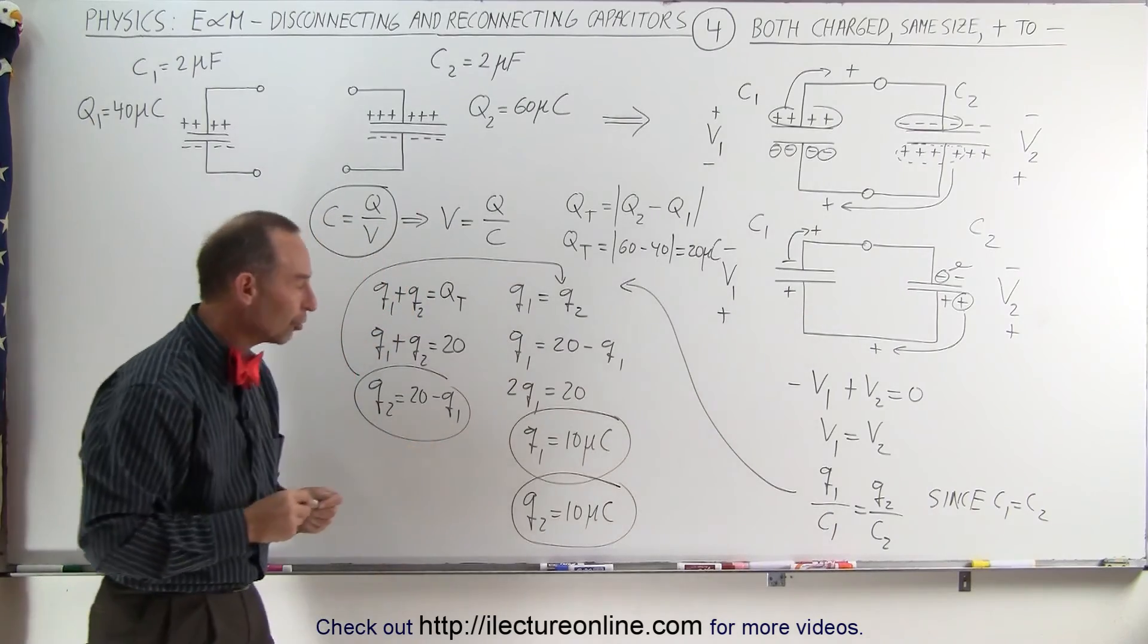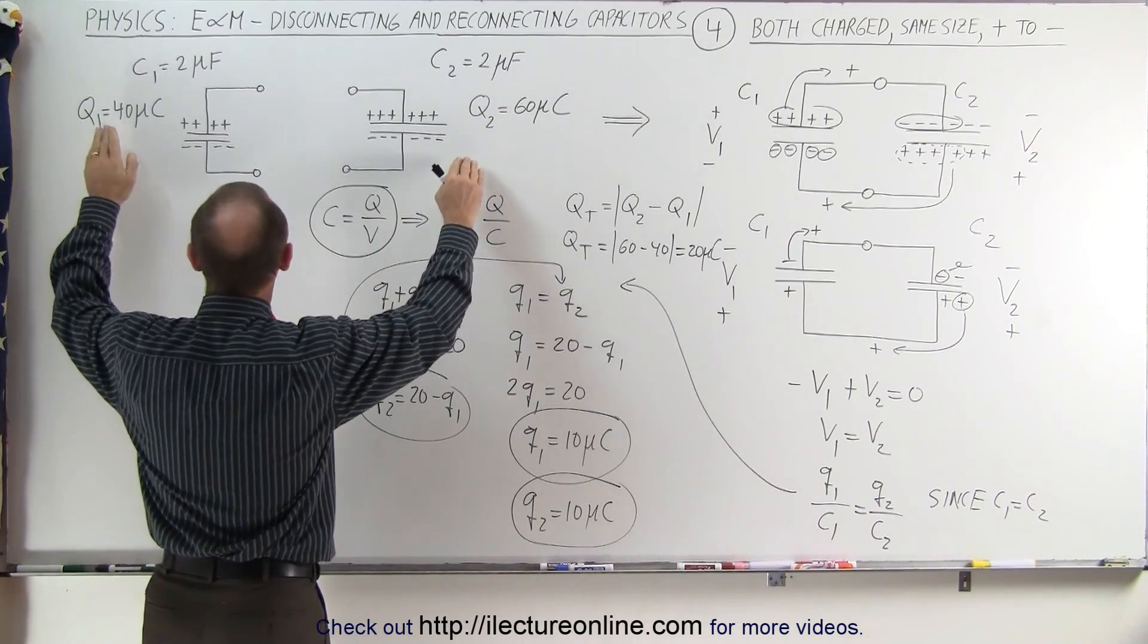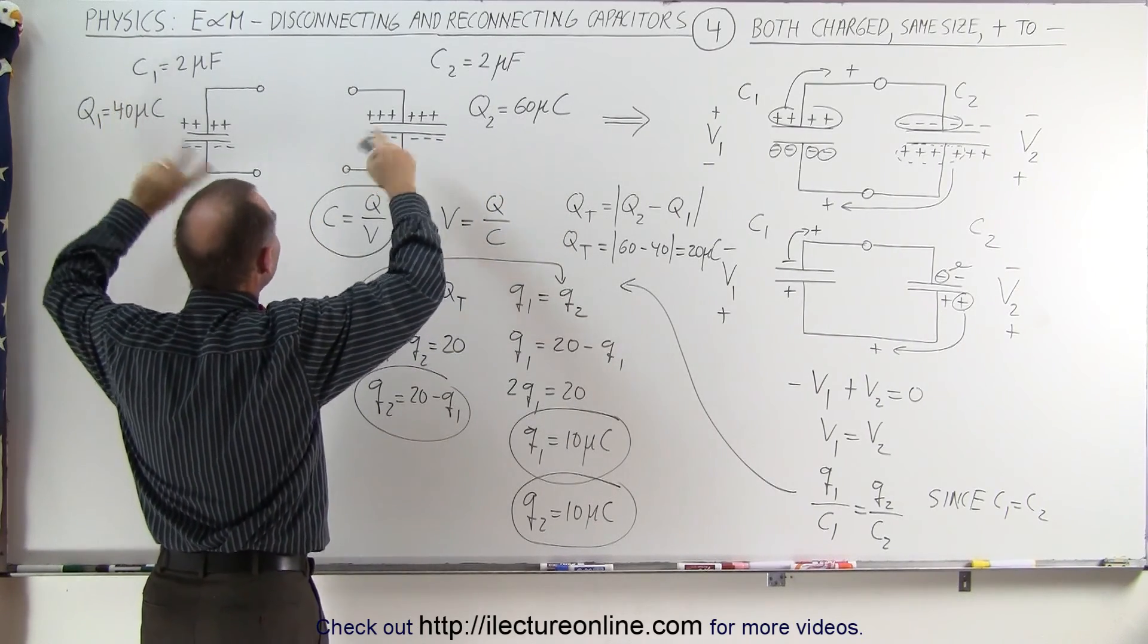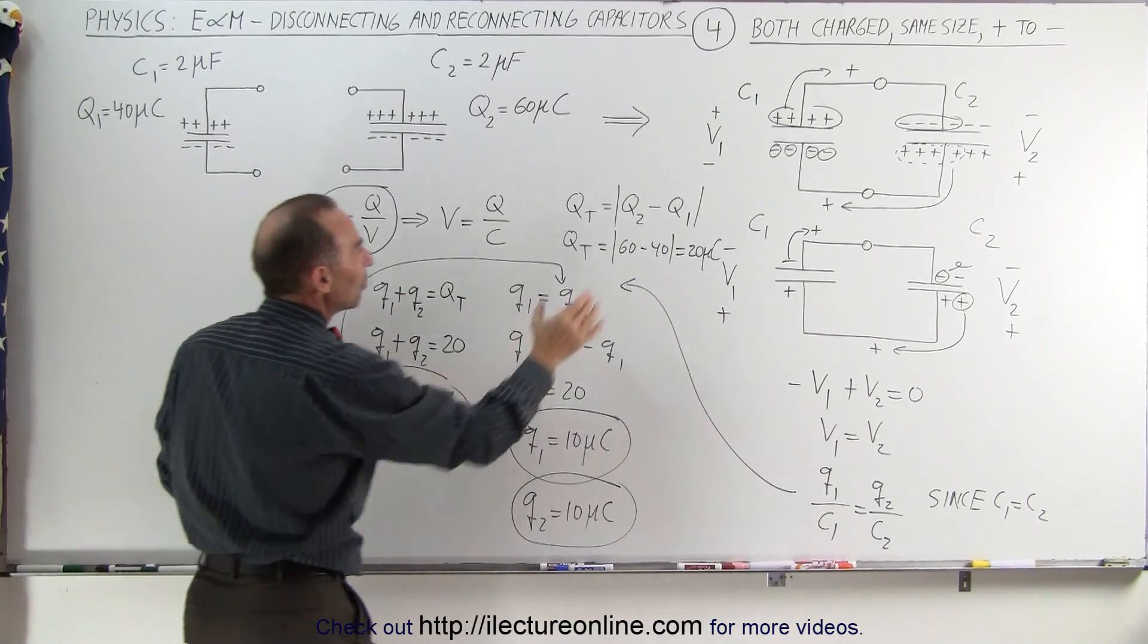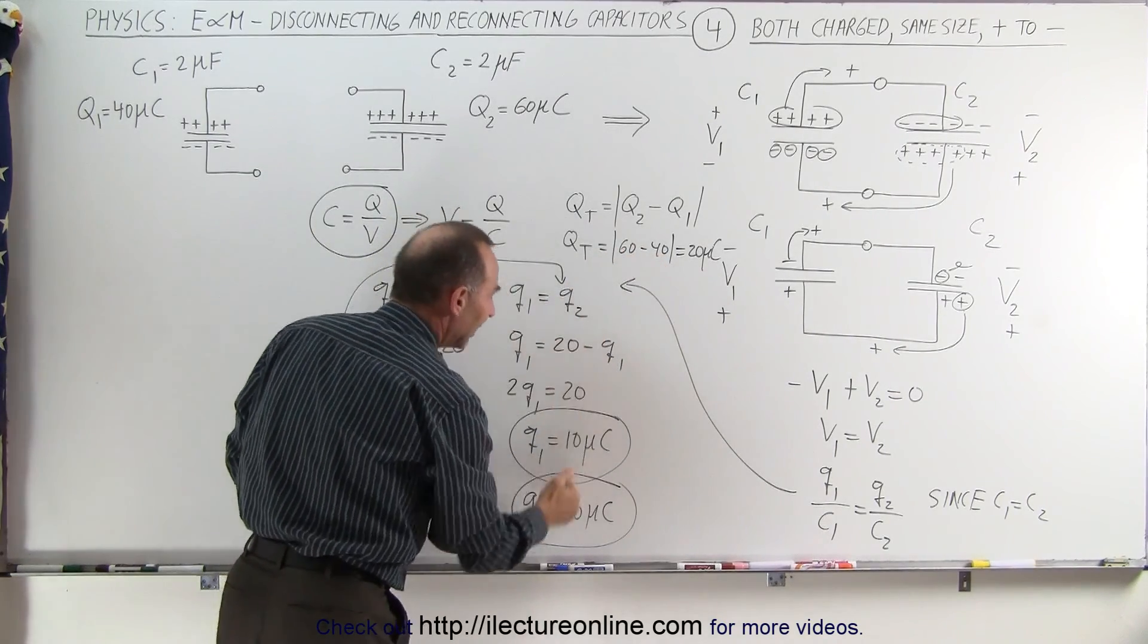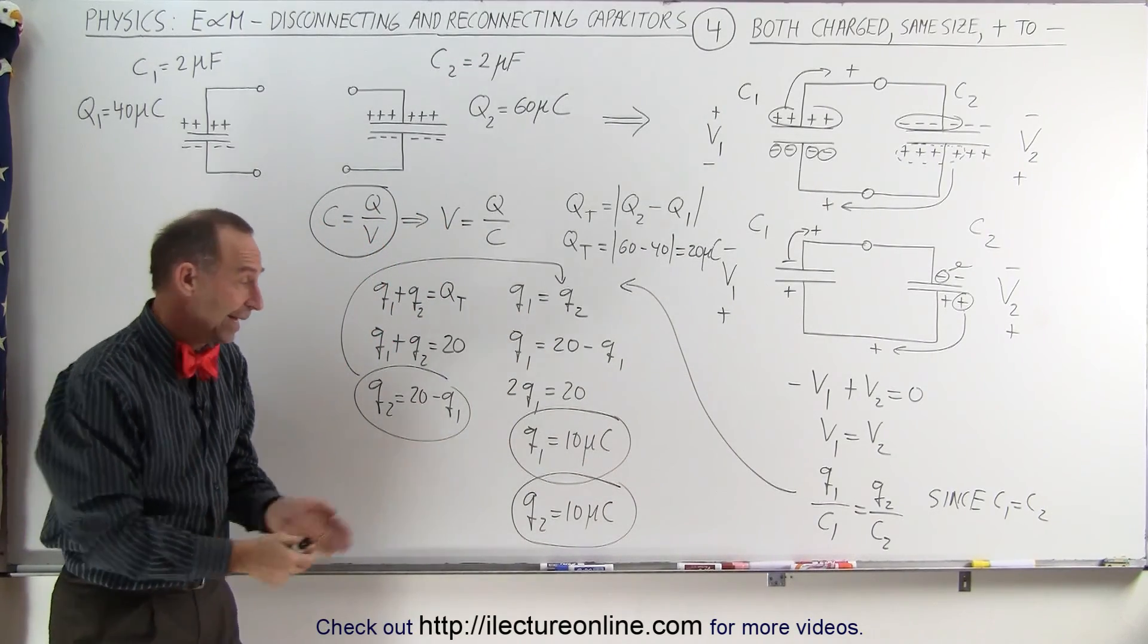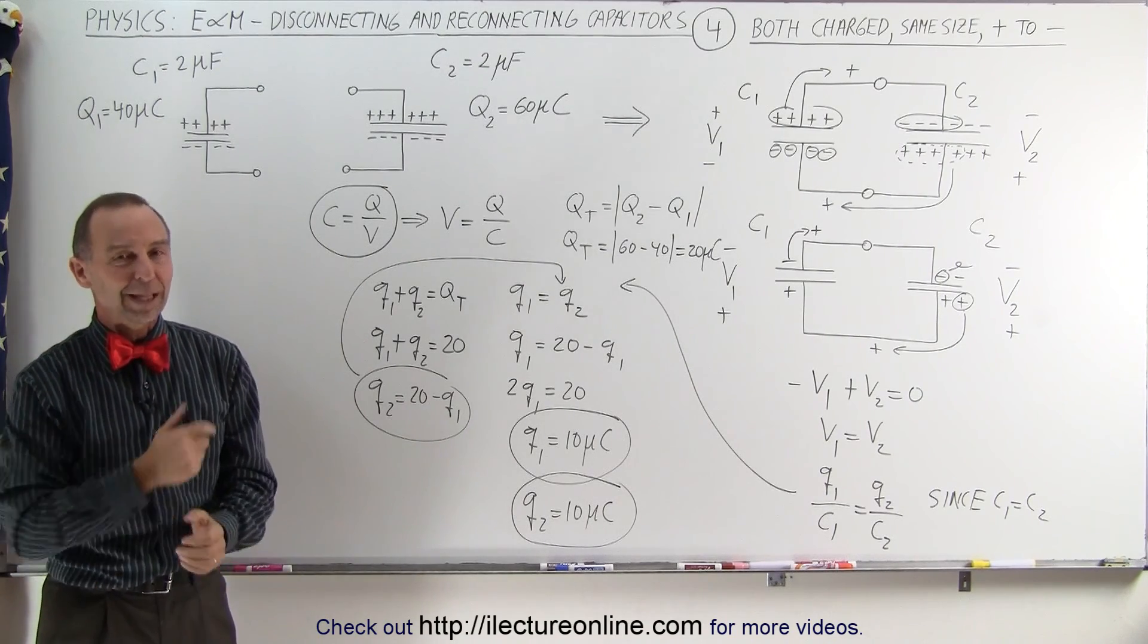That will be the final charge on each of the two capacitors. Even though they both started with 40 and 60 microcoulombs, if you connect them positive to negative, a lot of the charge gets negated. The total charge remaining is the difference between the two charges, which gets distributed equally between the two capacitors because they're the same size. And that's how it's done.